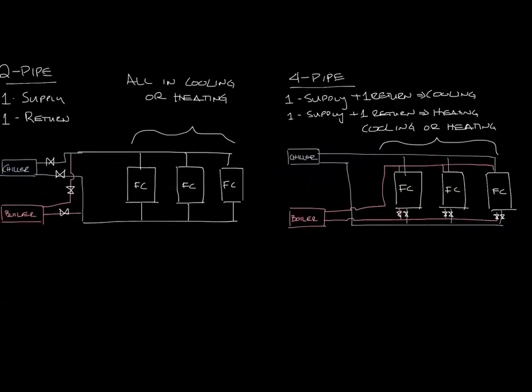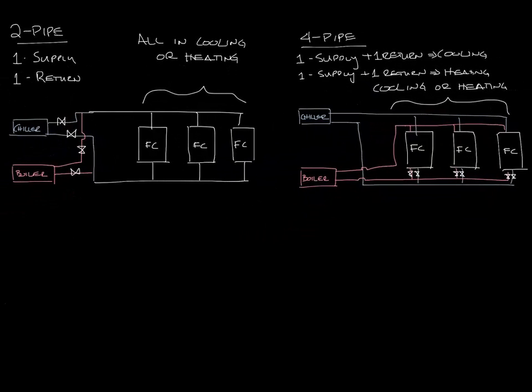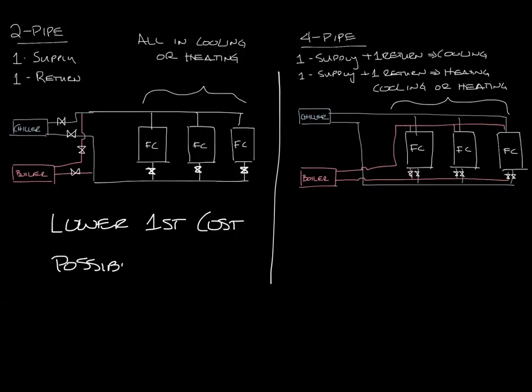Okay let's bring our two-pipe back on the screen. And I forgot to draw in the valves on the two-pipe because you'd have valves to control the flow through the fan coils as well here. Now two-pipe system has a lower first cost because it's got less piping in the system and there are fewer valves, but there is a possibility for the occupants to be uncomfortable because you can only have all heating or all cooling at any given time.